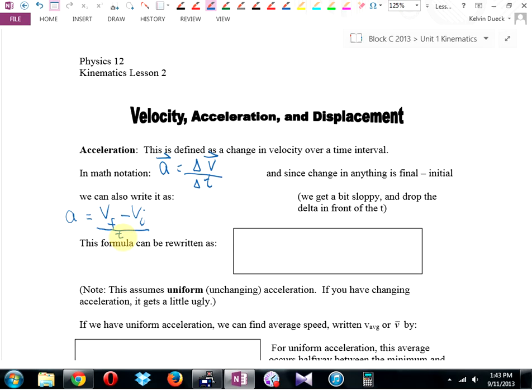And last year, we wrote this. We got the VF by itself. Well, since the T is on the bottom, we would have timesed by T. Then we would have plussed the VI over. We would have said VF vector equals VI vector plus A vector T scalar. VF equals VI plus AT. Remember that from last year, Jordan? We flogged it to death.